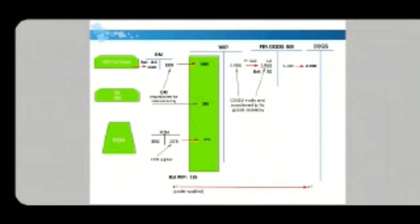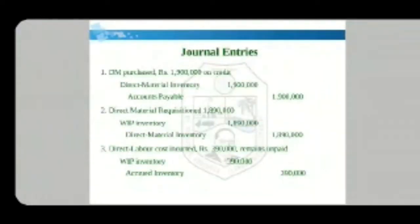The previous balance in final goods inventory was 12,000. We added 2,500,000 in completed goods and sold 2,480,000, giving a difference of 20,000. So 20,000 plus 12,000 gives a balance of 32,000. Regarding fixed overhead: actual was 392,000 and applied was 375,000, so 17,000 is under-applied. Note that all figures are in thousands.